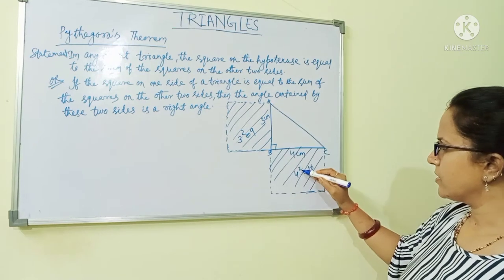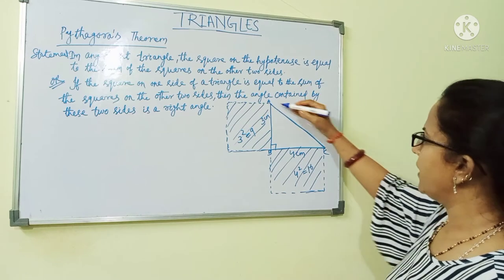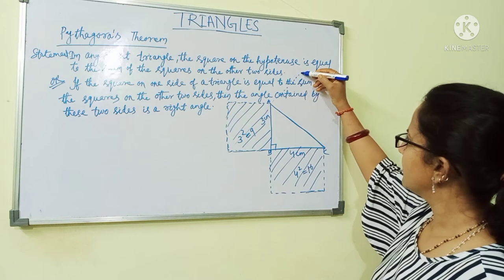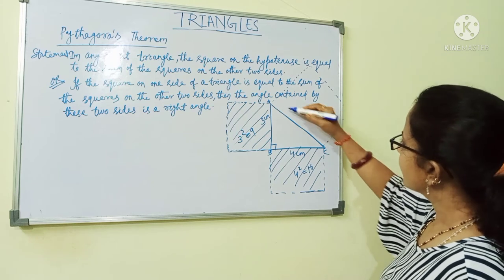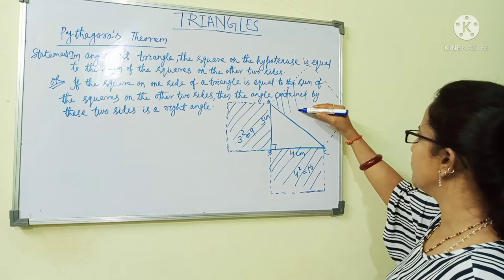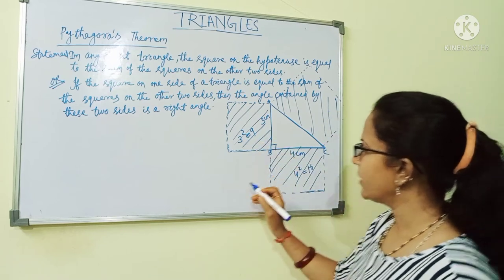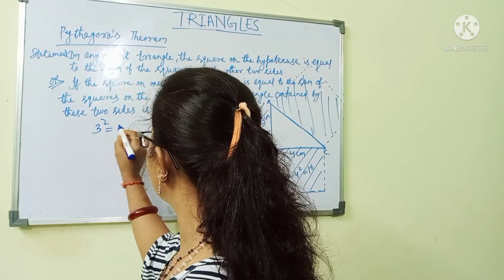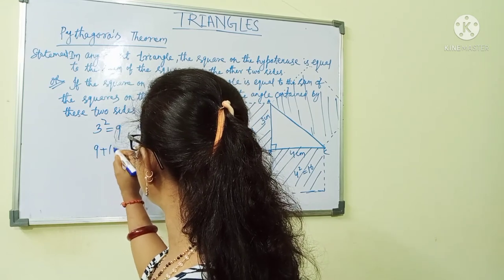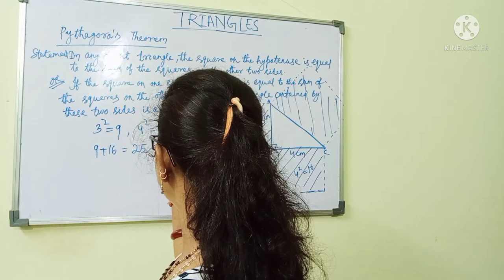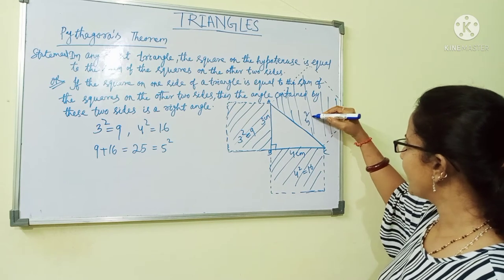If you add these two areas, what area will you get? If you make the hypotenuse side as a square, then this area will be equal to the sum of these two areas. So, 3 squared equals 9 and 4 squared equals 16, then 9 plus 16 gives you 25, which is nothing but 5 squared.